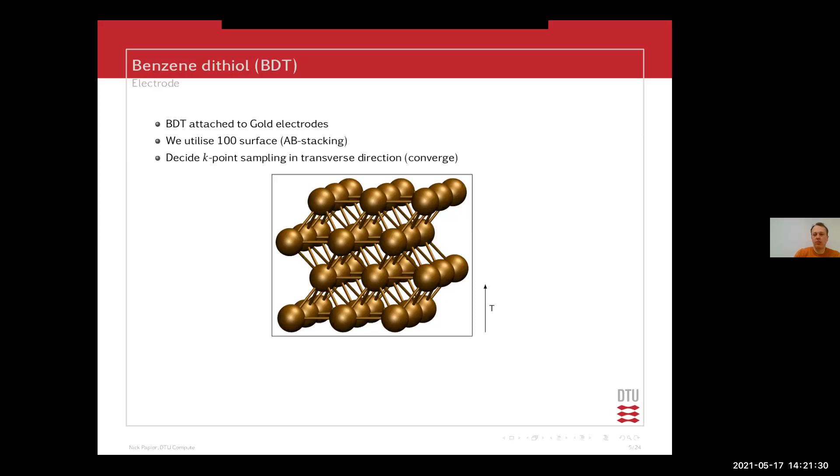Then you need to decide your K-point sampling in your transverse directions. So you have to converge your electronic structure for your electrode and for your device region. So they may not behave exactly the same in the Brillouin zone. So you should converge both of them, both your electrode and your device region to be sure that you get the correct or your physical expectations.